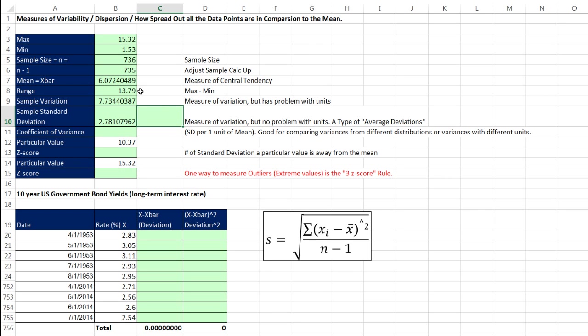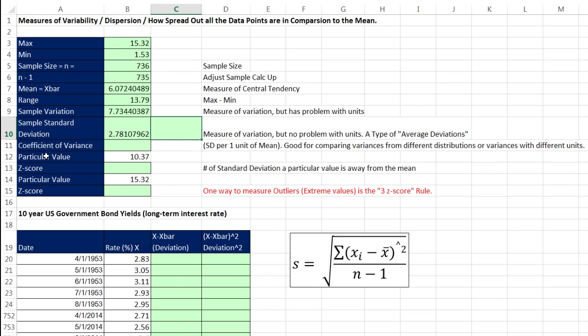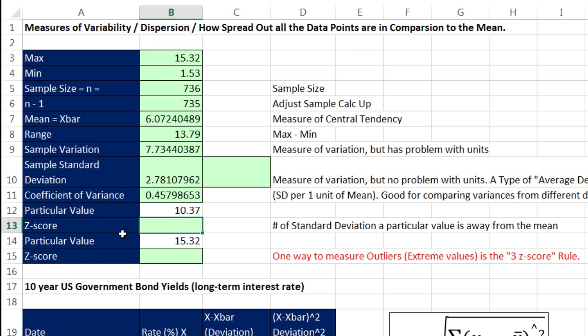There's another measure of variation that's pretty important, coefficient of variance. And it's important because we'll take standard deviation and divide it by mean, which will mean it gives us standard deviation per one unit of mean. And this is good when you're comparing variances from different distributions, particularly when the means are really far apart or the units are different. So I could, in this case, take the standard deviation and I want to express it in terms of units of mean. That means, in our case, for every one percentage point, the variance would be 0.45.